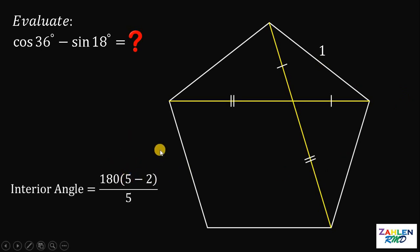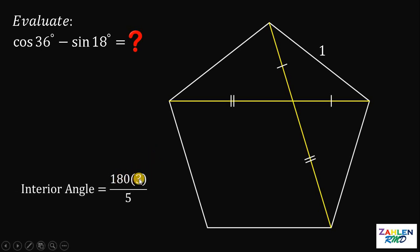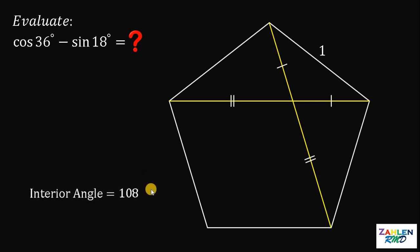For n equals 5: 5 minus 2 is 3, so we have 180 times 3 divided by 5. 180 divided by 5 is 36, and 36 times 3 gives 108. Therefore, the interior angle of this pentagon is 108 degrees.